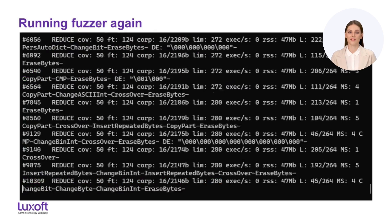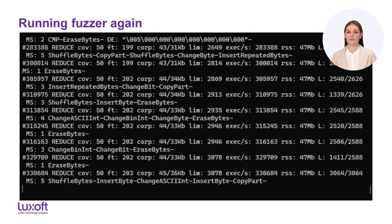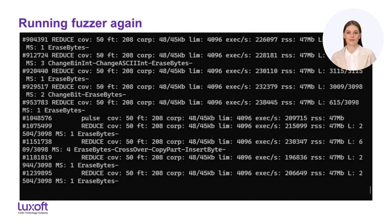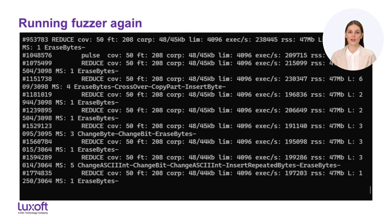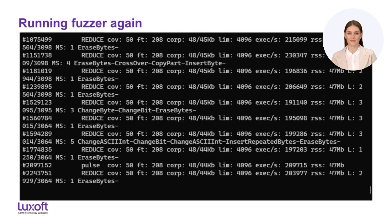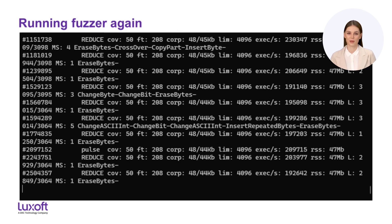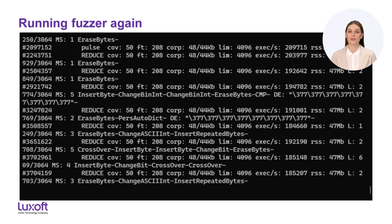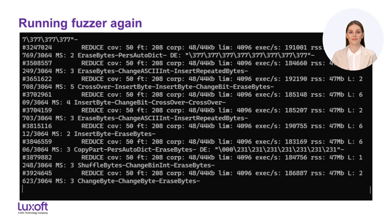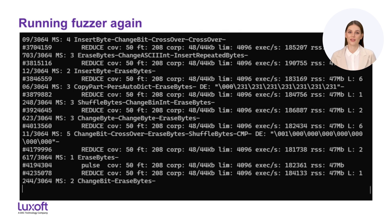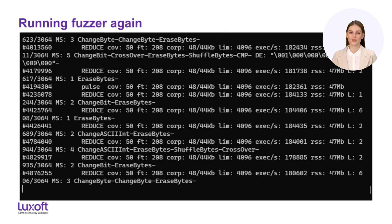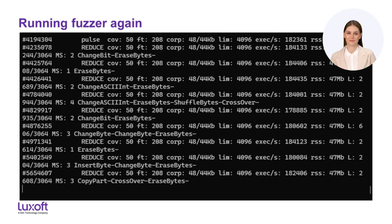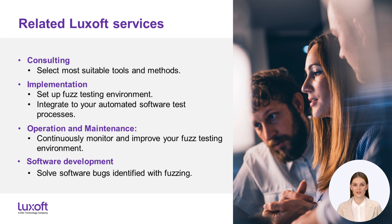Now we can resume the fuzzing process by feeding more randomized data into the motion planning component. The fuzzer tries to discover new paths in the code and to optimize the corpus by finding smaller data sets that would open the same code paths. The process can go on for a long time — fuzzing is never actually complete. The longer you run the fuzzer, the higher the chances to discover new issues.